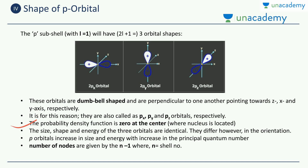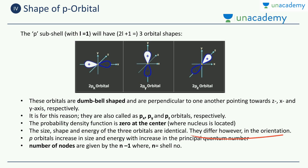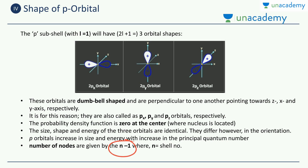The probability density function is 0 at the center — at the nucleus location — which means you won't find any electrons there. The size, shape, and energy of the three p orbitals are identical; they differ only in their orientation. The p orbitals increase in size and energy with increase in the principal quantum number n, same as the s orbitals. The number of nodes is again given by n minus 1.